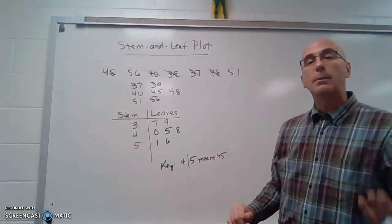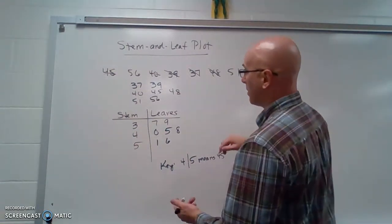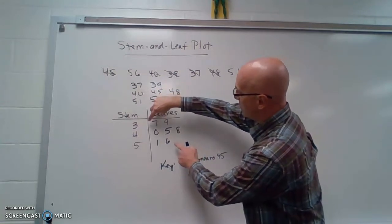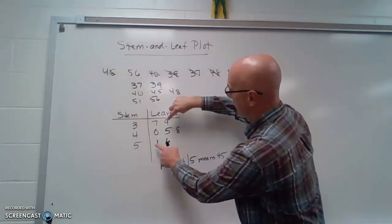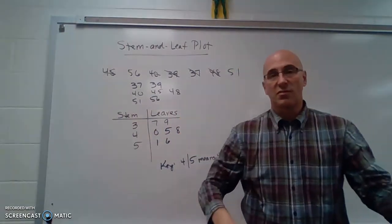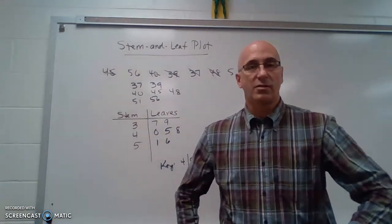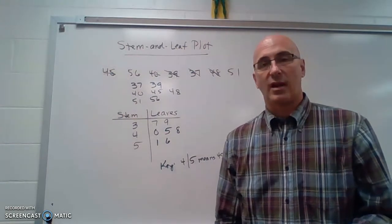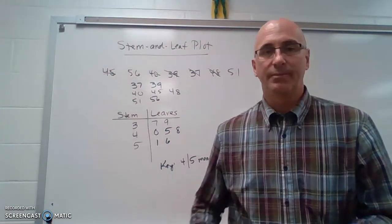We could find the median of this, the middle number, because we just start counting from the smallest to biggest, and there our median is 45. So we can do all of those same basic statistical analyses with a stem and leaf plot.